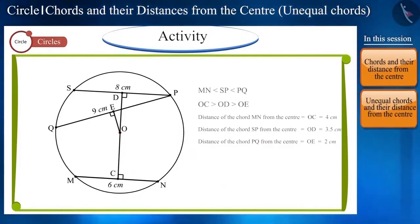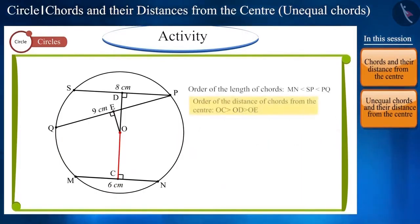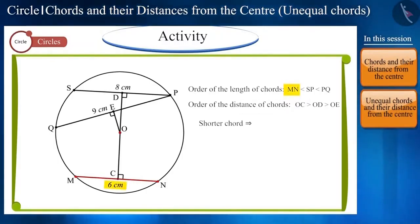This means that the order of the distance of unequal chords from the center is just the opposite of the order of the length of chords. Therefore, the shorter the length of the chord, the more distant it is from the center and the larger the chord, the closer it is to the center.